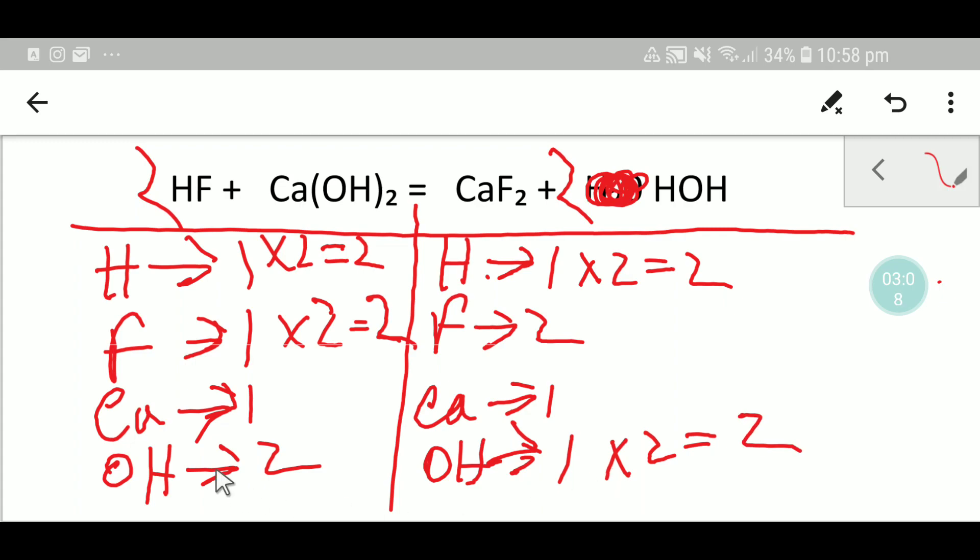2 hydroxide. Now you see we have 2 hydrogen, 2 hydrogen, 2 fluorine, 2 fluorine, 1 calcium, 1 calcium, 2 hydroxide, 2 hydroxide. So everything is balanced. So you can say that this is the balanced equation.